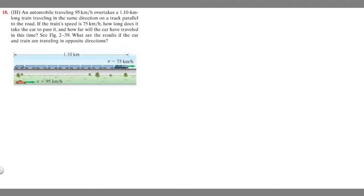In this problem we're told an automobile traveling 95 kilometers per hour overtakes a 1.1 kilometer long train traveling in the same direction on a track parallel to the road. If the train speed is 75 kilometers per hour, how long does it take the car to pass it and how far will the car have traveled in this time? What are the results if the car and train are traveling in opposite directions?